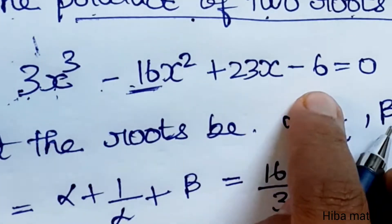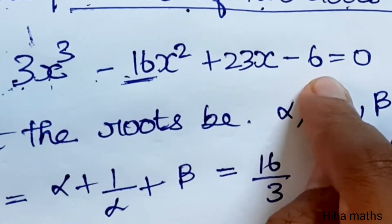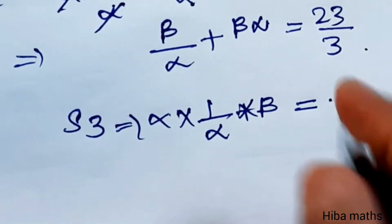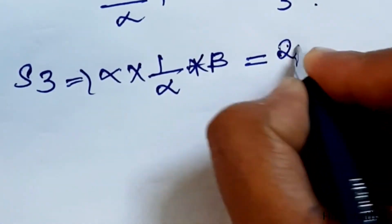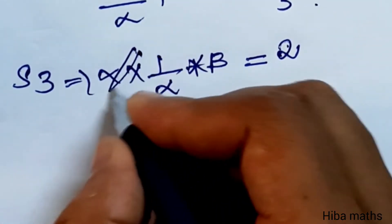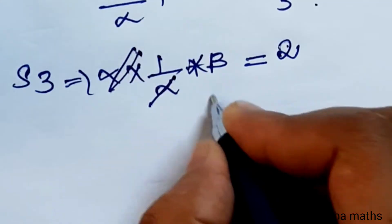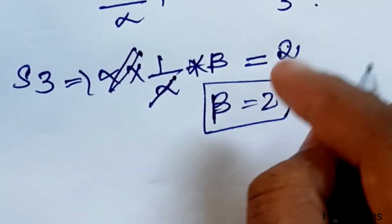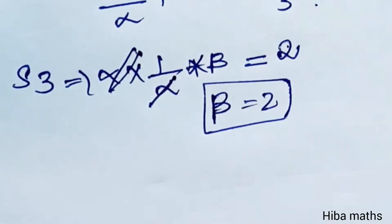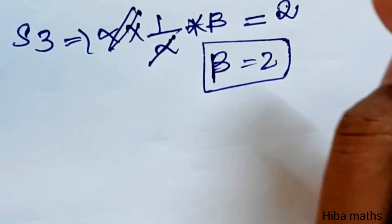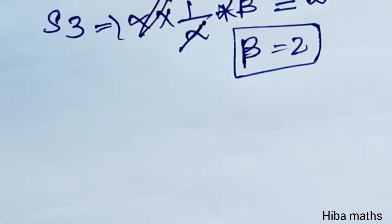For S3, the product of all three roots: α × (1/α) × β = 6/3 = 2. So α cancels out and β = 2.